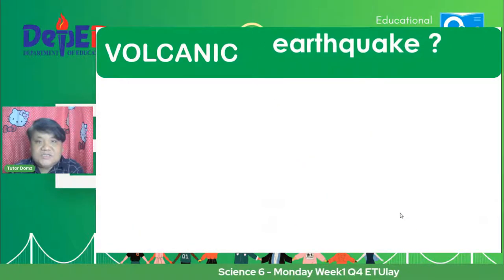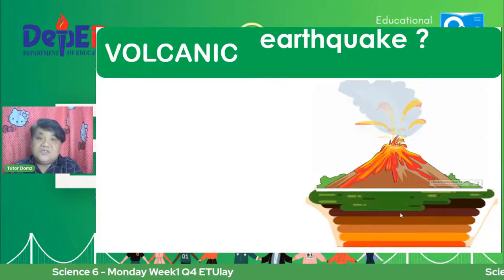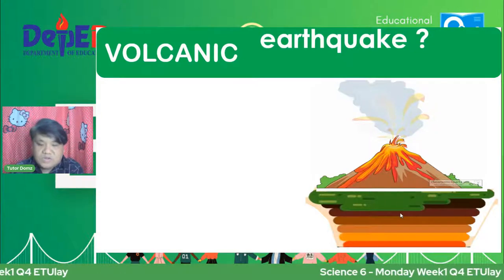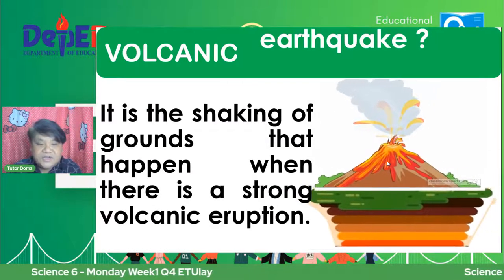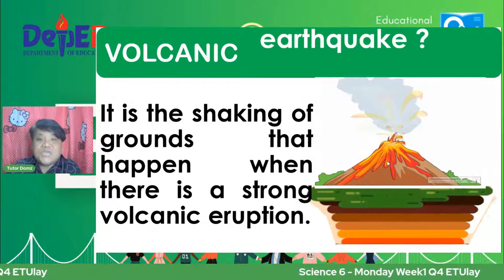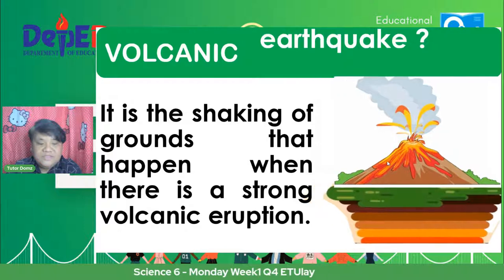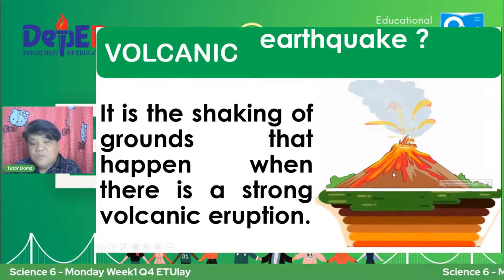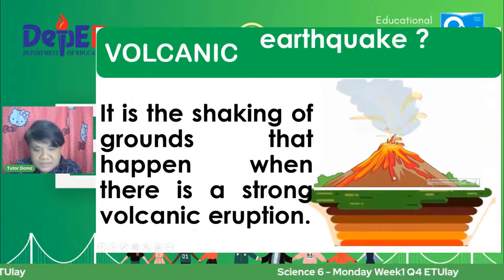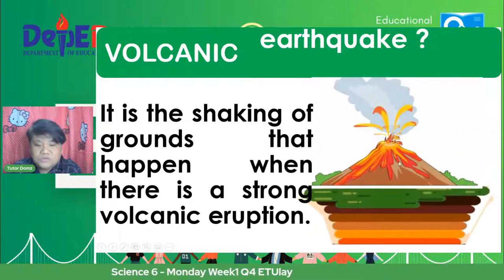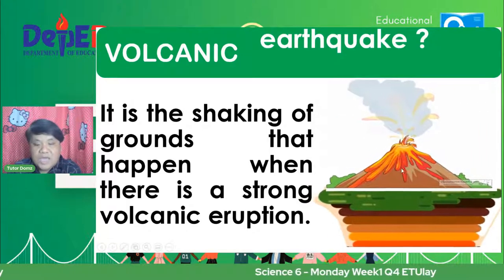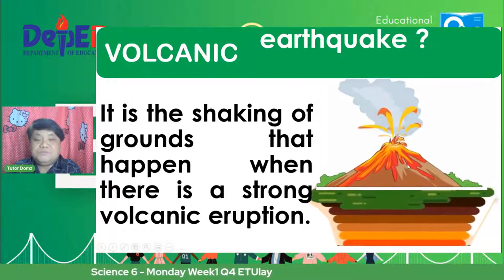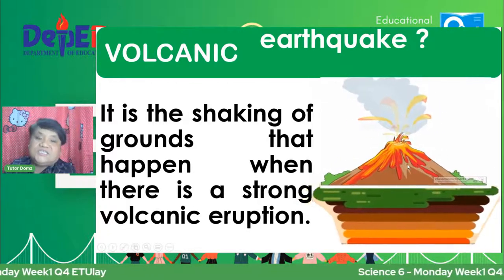So let's start with volcanic earthquake. We have here the illustration. Mayroong umuusok, and then sa bunganga ng vulkan na ito, mayroong dumadaloy. Ang tawag natin dyan is volcanic earthquake. Bakit nagkakaroon ng volcanic earthquake? It is the shaking of grounds that happens when there is a strong volcanic eruption. Yung mga materials na lumalabas sa loob ng vulkan, sobrang init, kailangan nilang makahanap ng way out. Kaya nagkakaroon ng pagsabog. Habang sumasabog yung vulkan, may pagyanig o may shaking na mangyayari doon — ang tawag natin doon is volcanic earthquake.